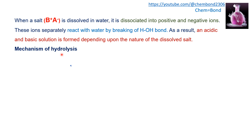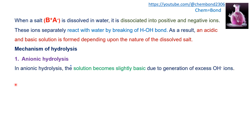The mechanism of hydrolysis is divided into two categories. The first is anionic hydrolysis, where the negative part of the salt reacts with water. In anionic hydrolysis, the solution becomes slightly basic due to the generation of excess OH⁻ ions, making the resultant solution basic.